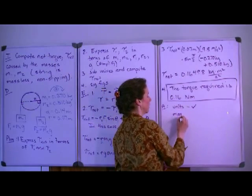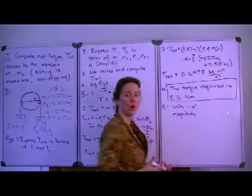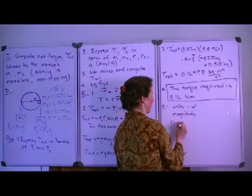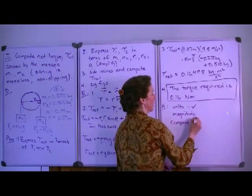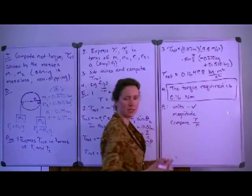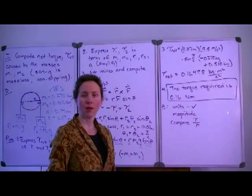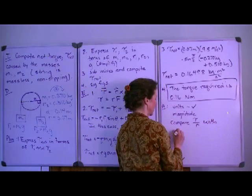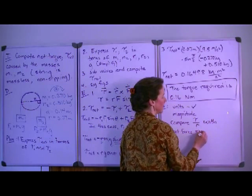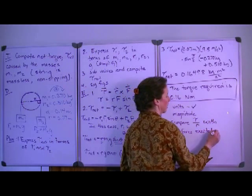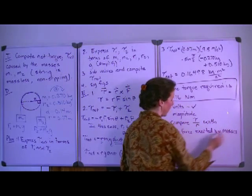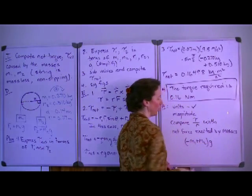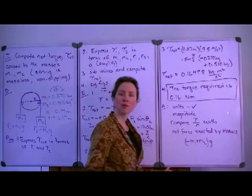What about the magnitude? Well, the torque is a force applied at a distance. So if we take this torque and divide it by the moment arm, which is the same because we have a pulley here, and we want to compare it with the net force exerted by the masses. So that would be minus m1 plus m2 times gravitational acceleration. And in this case, they both come out.